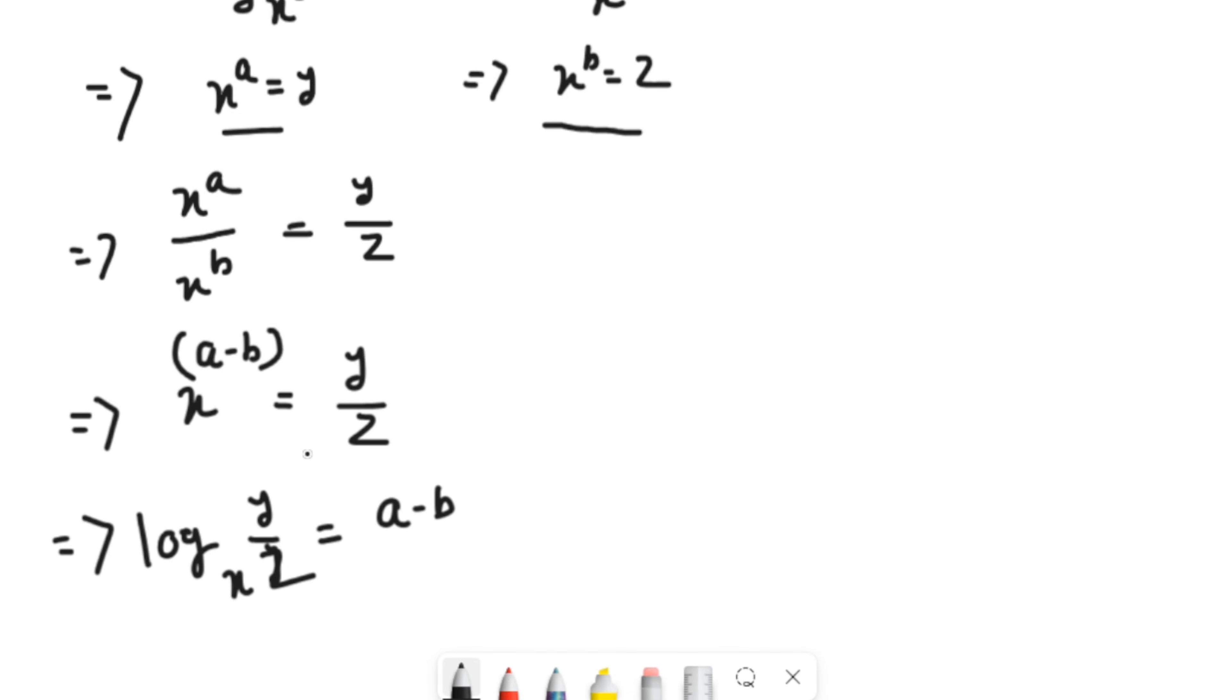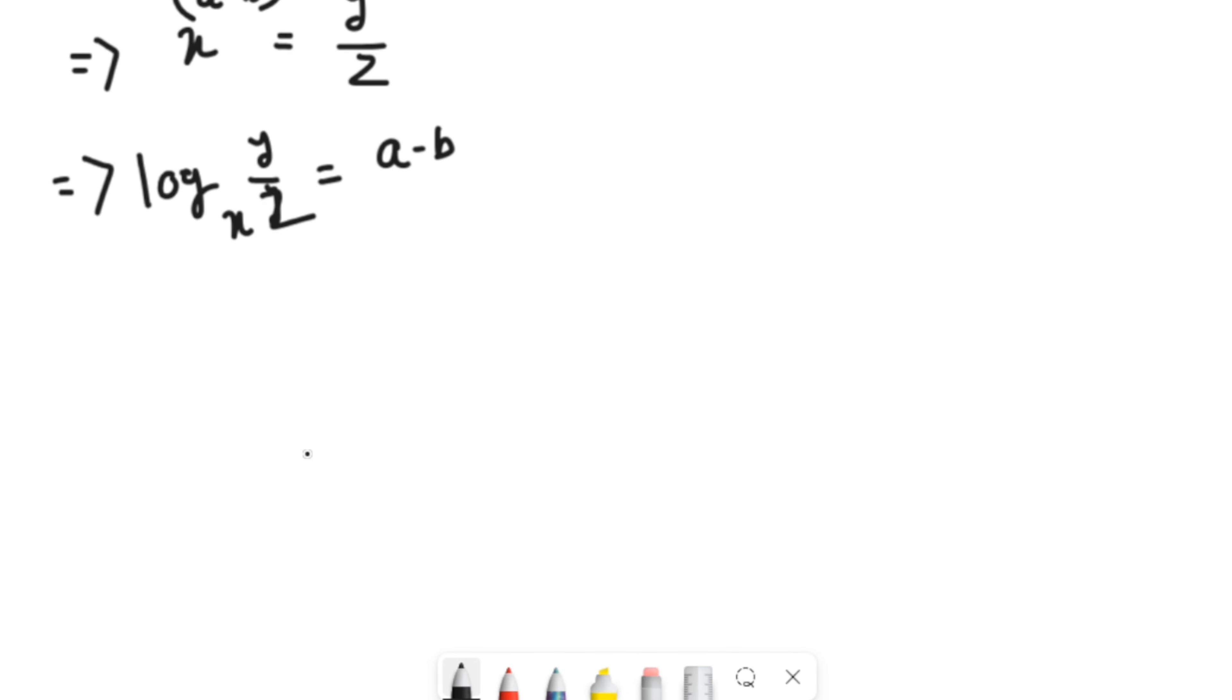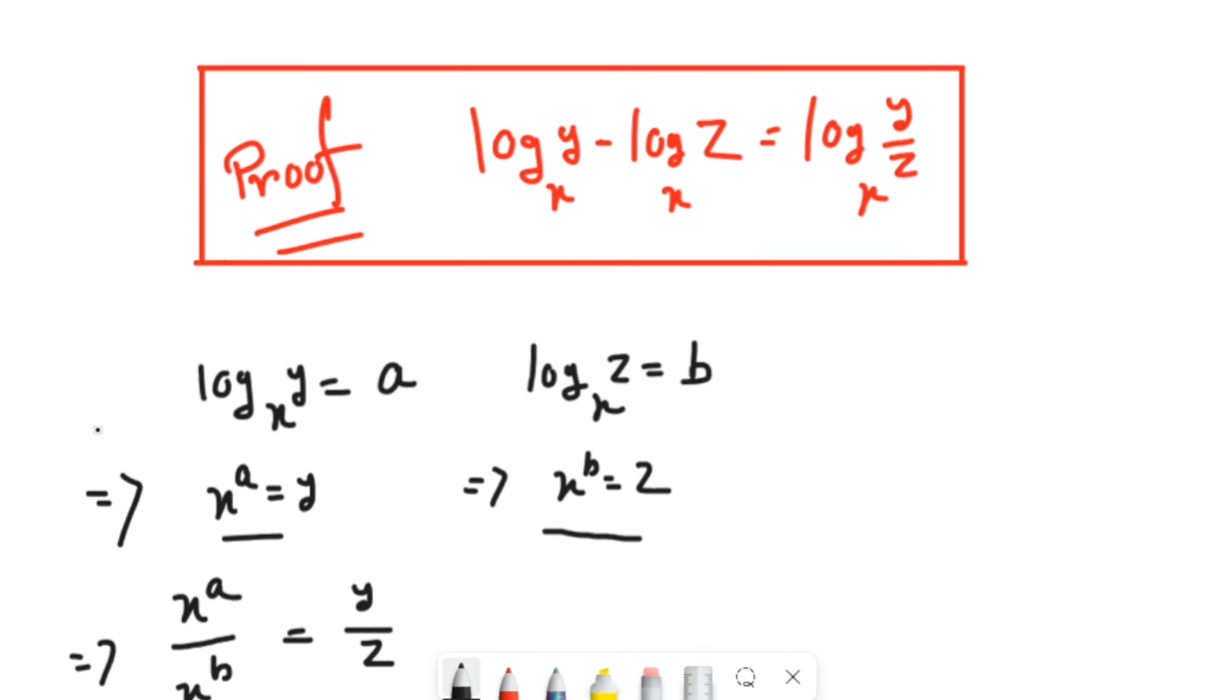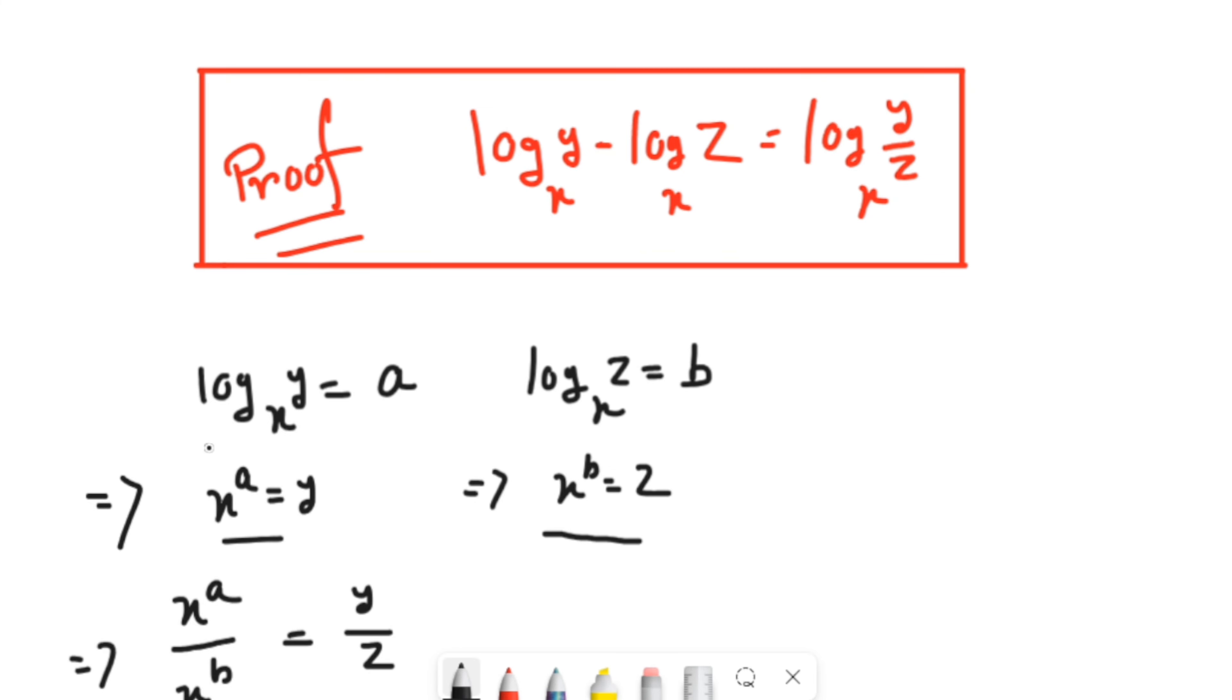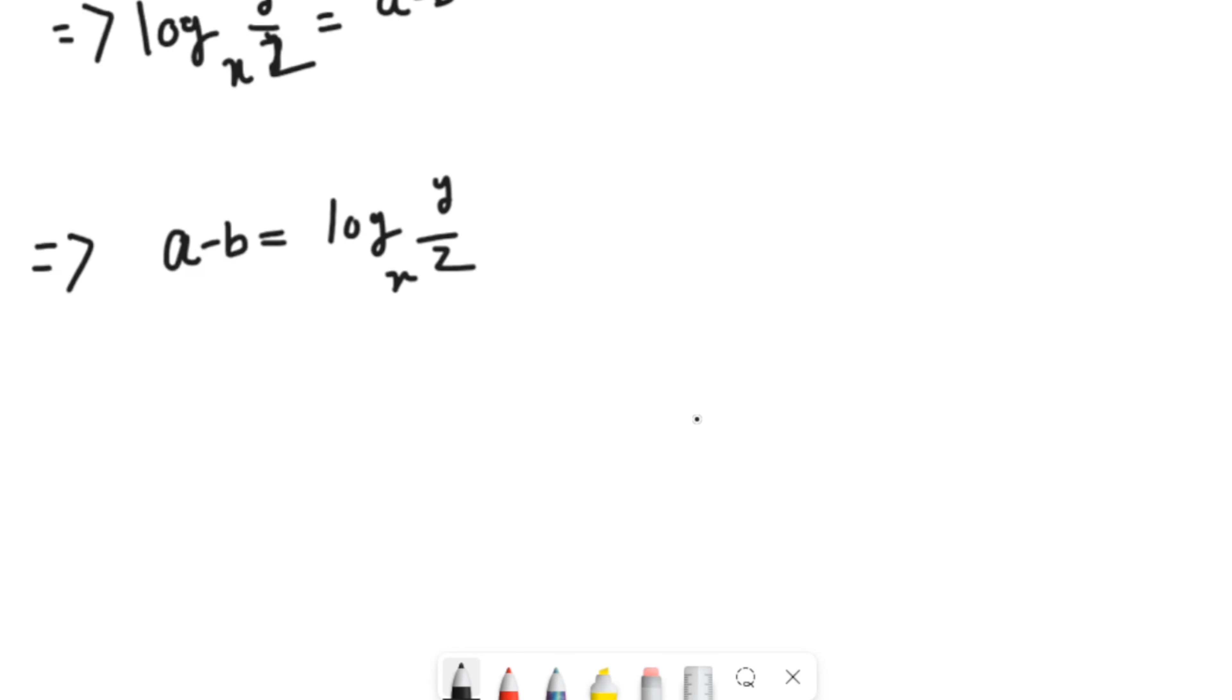Now if we change both sides of the equation, it will become a minus b equals log base x of y by z. So what does a mean? a means log base x of y and b means log base x of z. So we will be just putting this value.